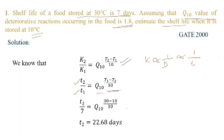So we will put the value: t2/7 equals Q10. In the place of Q10 we can put 1.8, and then we know the temperature, initial 30 minus 10 divided by 10. So t2 equals 22.68 days. So what we got from here is that the shelf life of the food stored at 10°C will be 22.68 days.